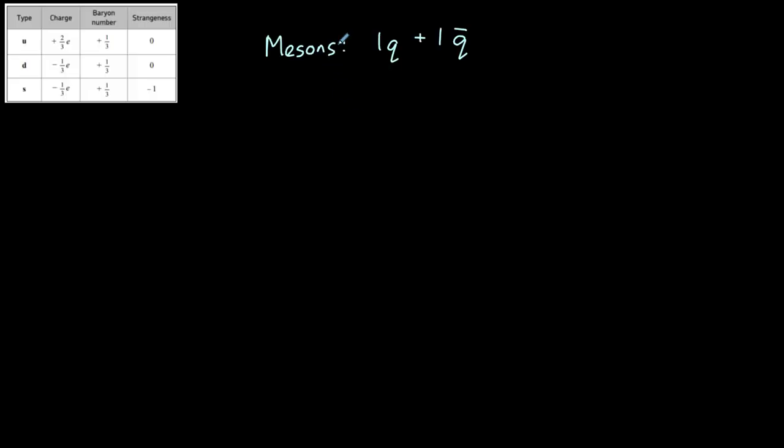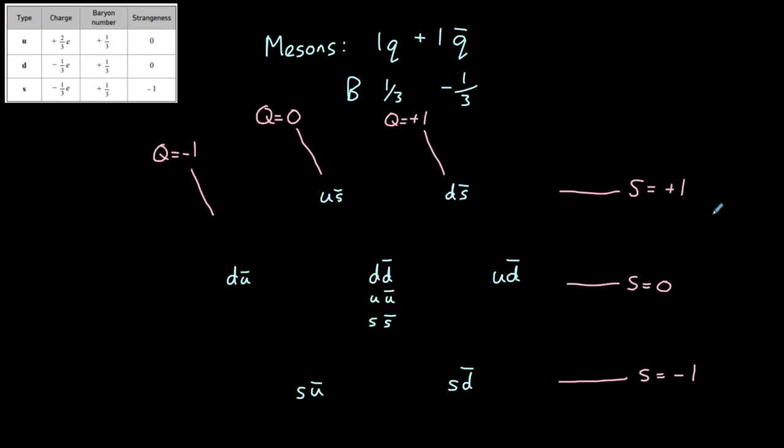Mesons are each made of one quark and one antiquark. This means that they have a baryon number of zero, as the baryon number of the quark is cancelled out by the baryon number of the antiquark. The up, down, and strange quarks and their respective antiquarks can produce nine different combinations of mesons.